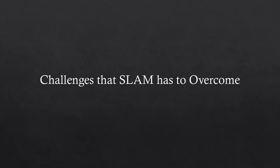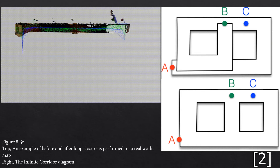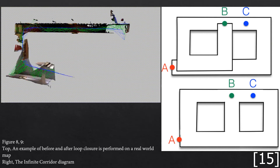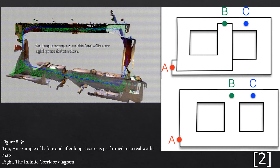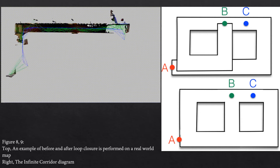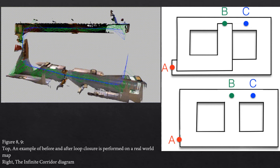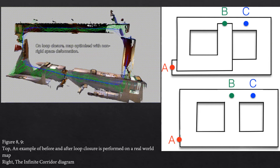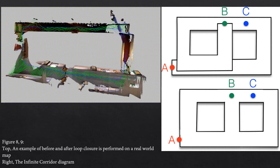Finally, let's talk about two challenges that SLAM must overcome. The first is a more general issue: the loop closure problem. This occurs due to all sensory data used by SLAM containing some amount of inaccuracy. Over time, if not dealt with, this can accumulate, making it impossible to locate itself within the environment. This can even lead to the map distorting. An example of this is called the infinite corridor — it has not recognized that it has been somewhere before, resulting in the internal map no longer reflecting reality.